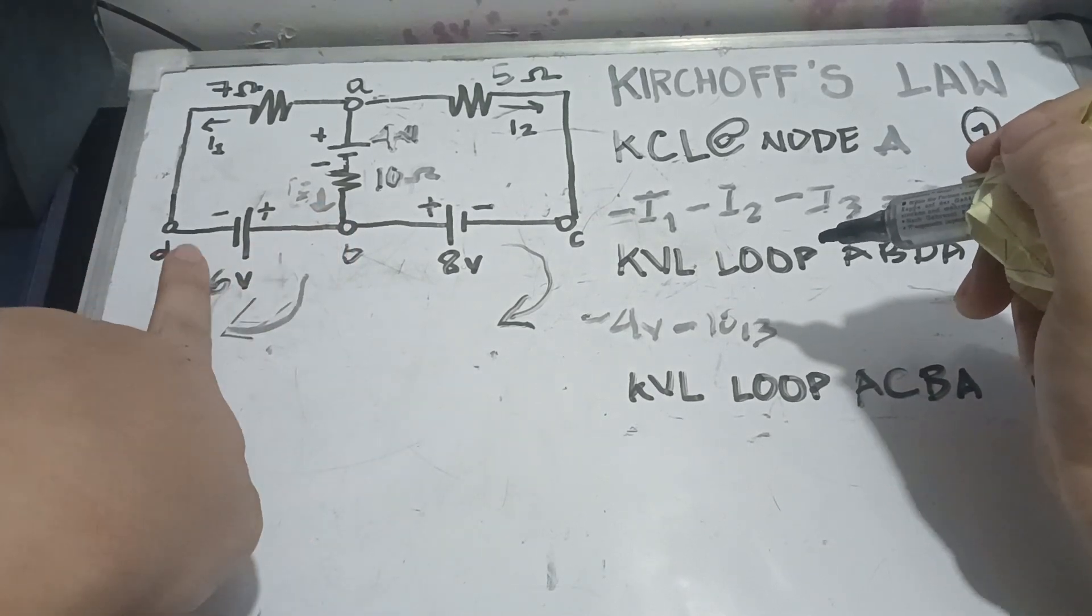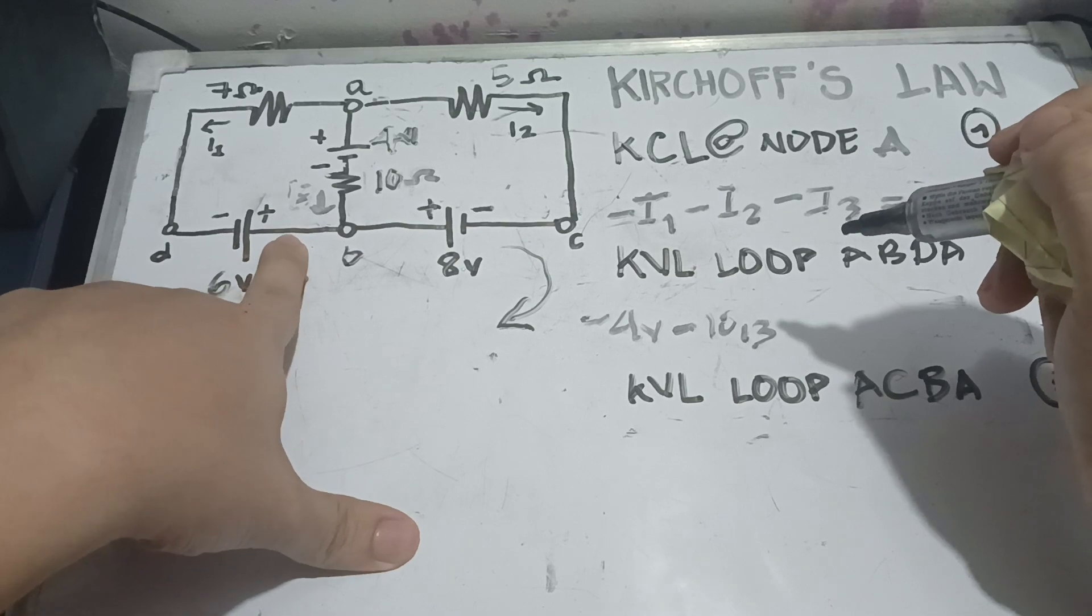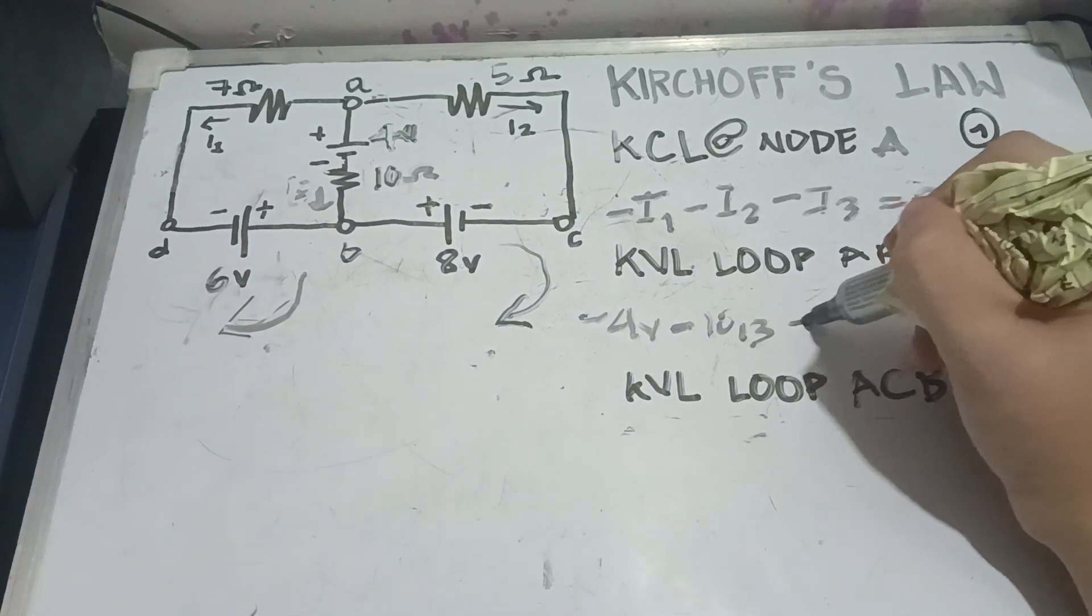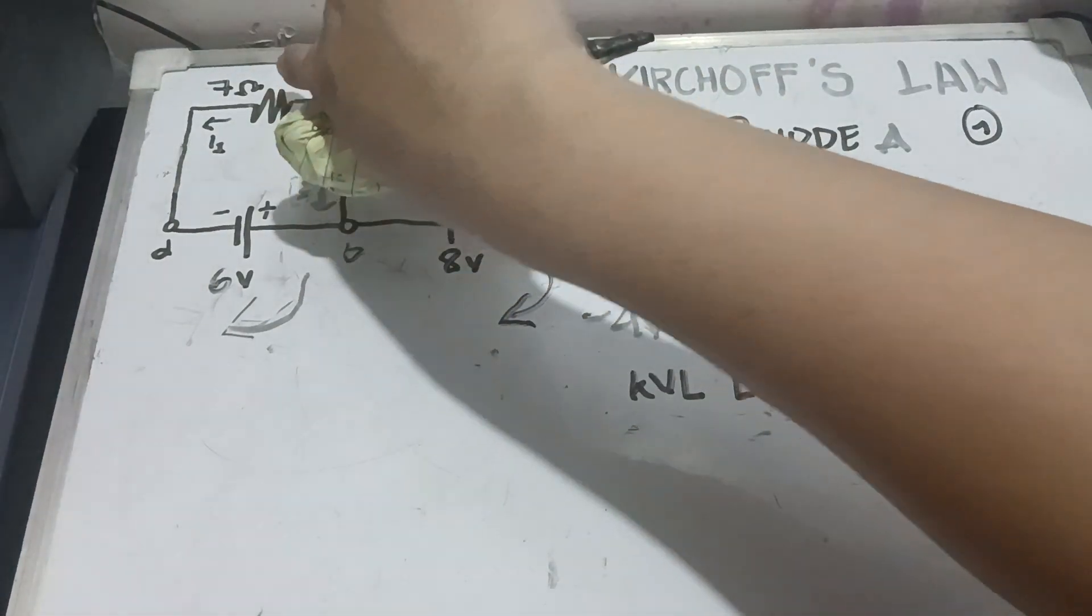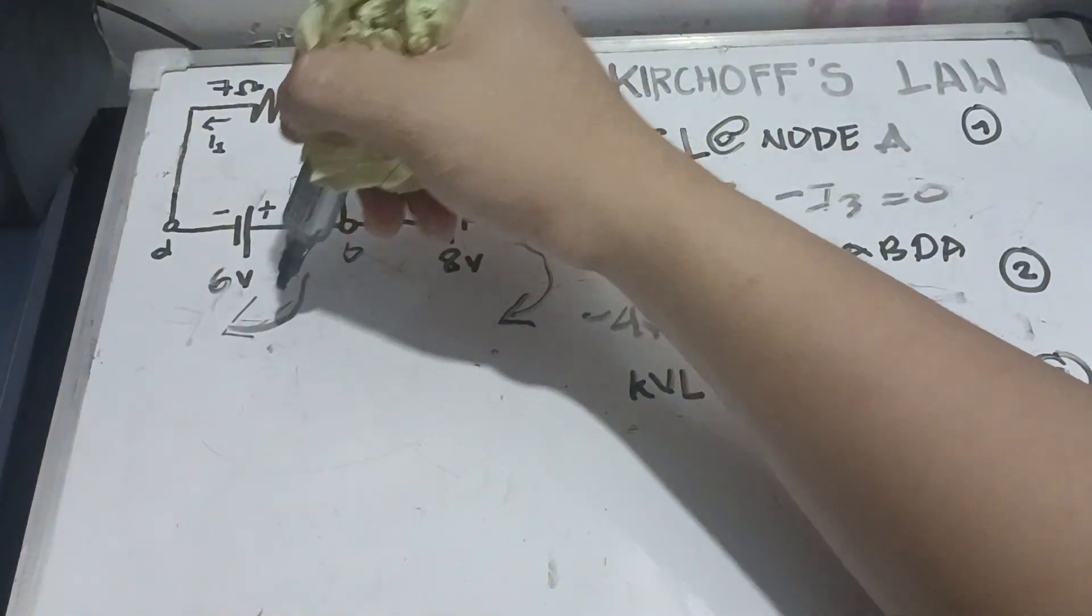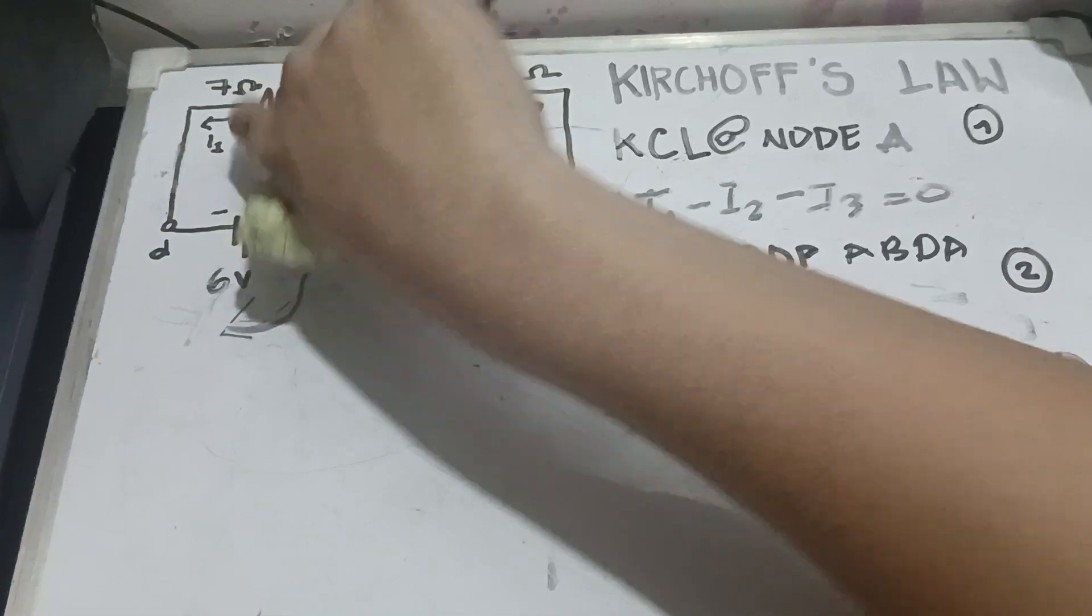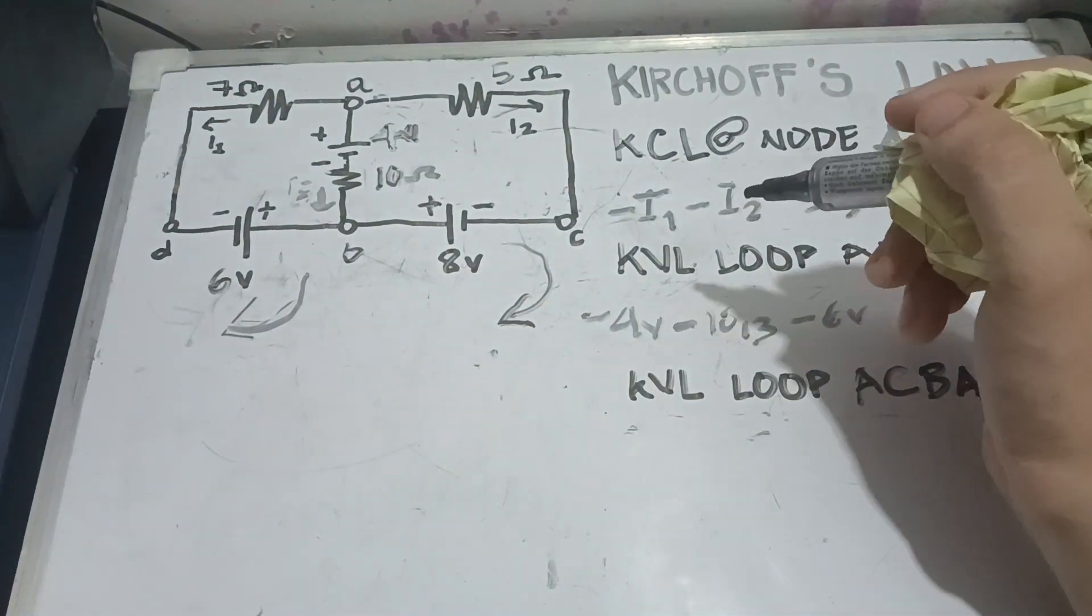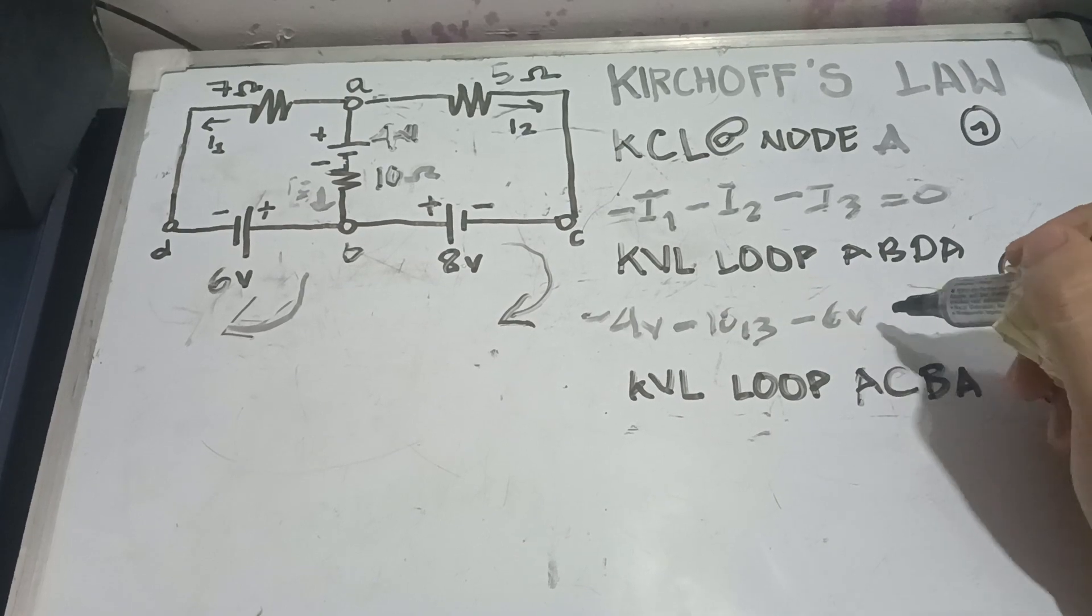We are going to our battery here which is 6 volts from positive to negative. So, you're going to write negative 6. And we're going on our 7 ohms resistor. So, our 7 ohms resistor is counter-flowing. This one is going counterclockwise, we are going clockwise. So, if they are going salubong in Tagalog, it's going to be positive.